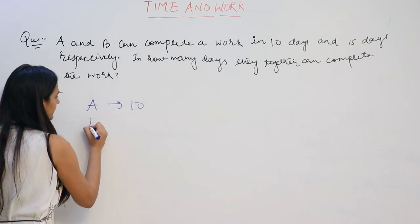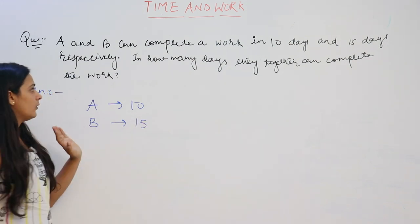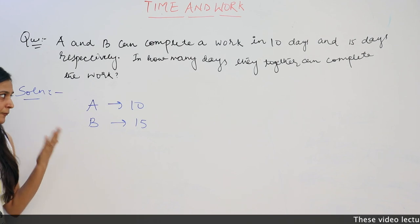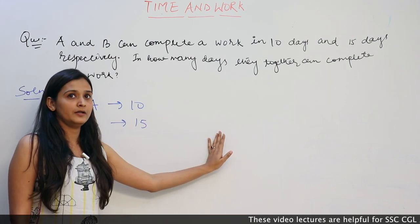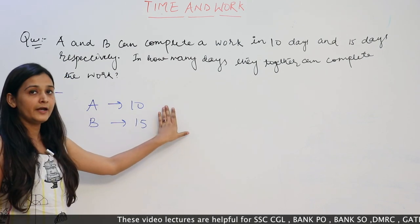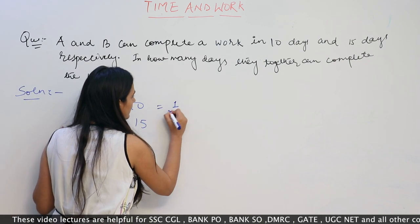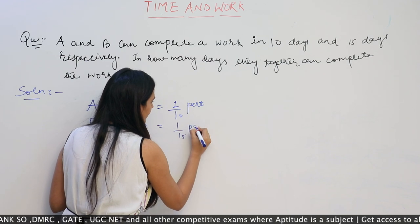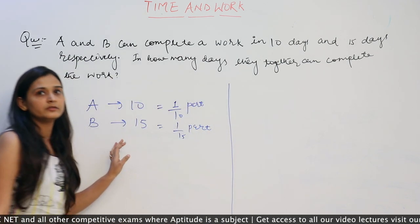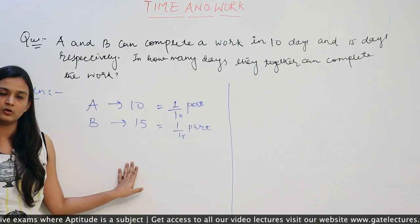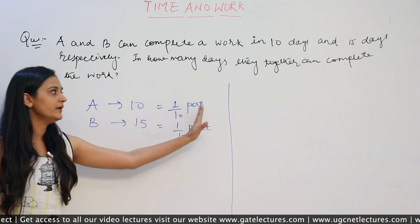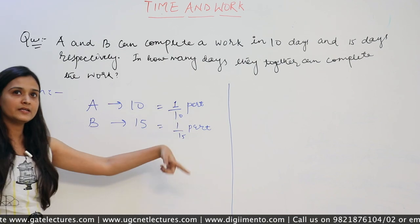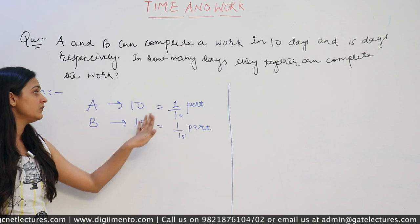A can complete a work in 10 days, B can complete the same work in 15 days. If A completes the full work in 10 days, his one day work is 1/10. Similarly, the one day work of B is 1/15. This one day work is called the efficiency or capacity of a person. When we reverse this efficiency, it gives the total time in which the work is completed.